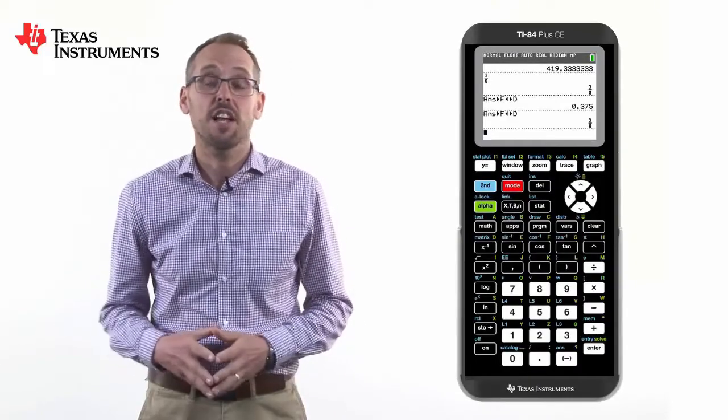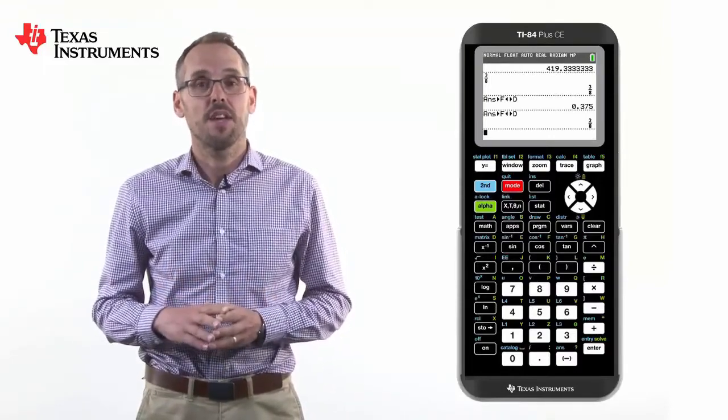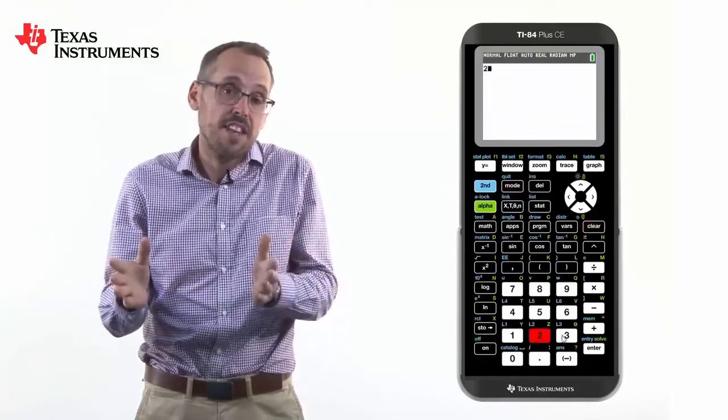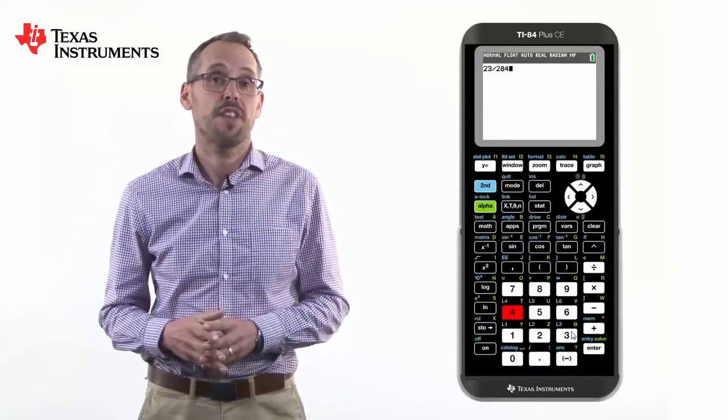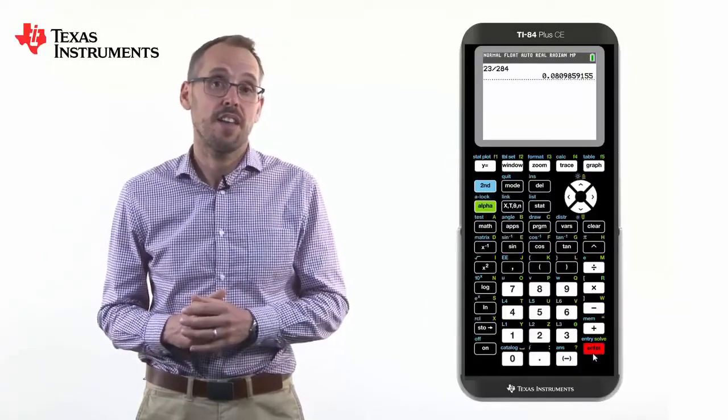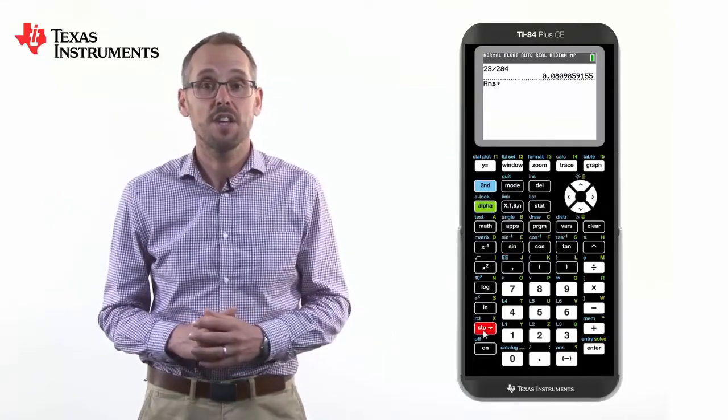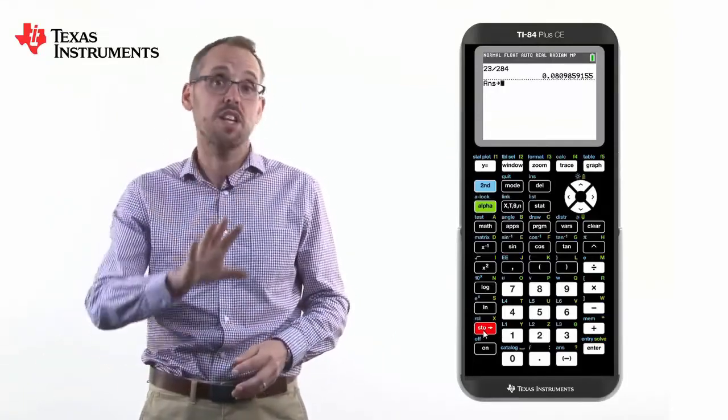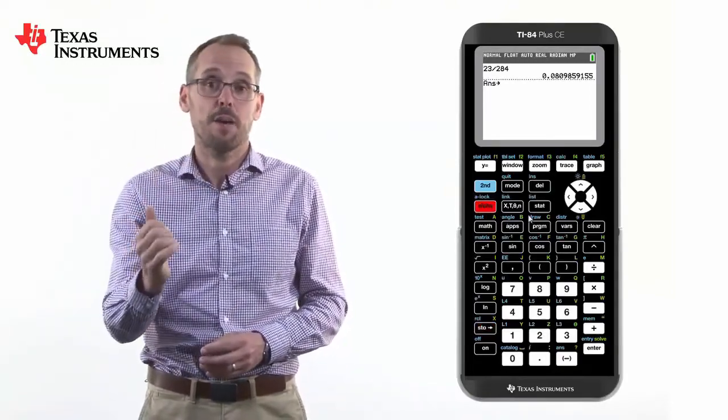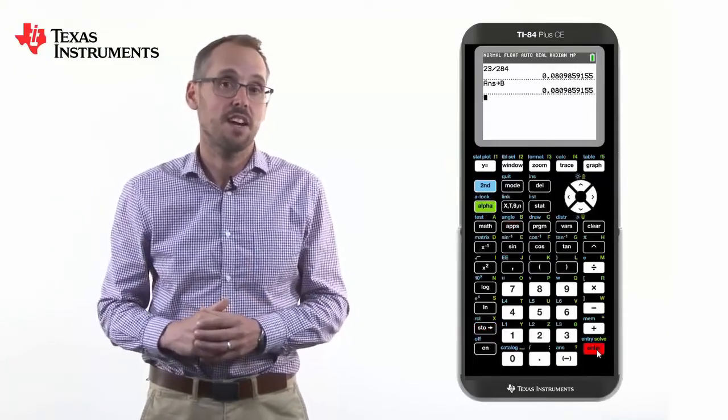Now back on the home screen, I'd like to share with you a really nice feature which is the store functionality. I've experienced this a lot with senior students who really like to have a long number that they need to use in a later calculation stored as a variable. To do this, they come up with the number and then press the store button, which is located above the on key on the handheld, and we can store it as any variable we like. These are all in green across the screen. To access those we would press alpha and then that button. That number is now stored as that variable and can be used in later calculations.